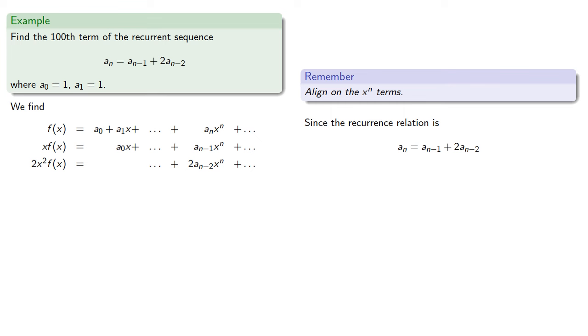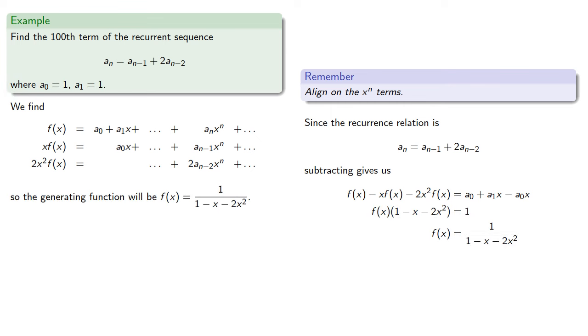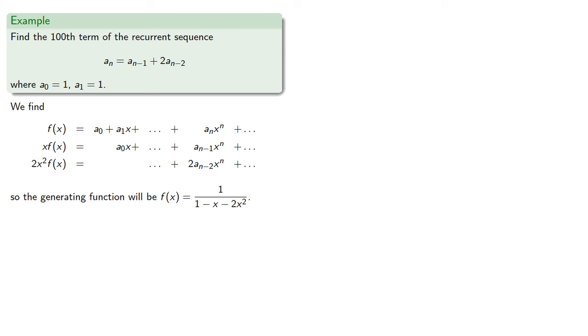Since the recurrence relationship is given, subtracting gives us the equation. Since we know a0 and a1, we can substitute those in and solve for f of x. And so our generating function will be determined. To make use of this,